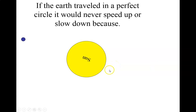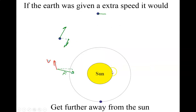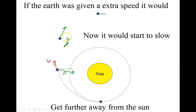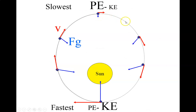If the Earth traveled in a perfect circle it would never speed up or slow down because the force and motion would be perpendicular. If the Earth were given a little extra speed, it would move further from the Sun, slow down, reach a high point, then speed up again on the other side — resulting in an elliptical orbit with the Sun at one focus. Most planets follow pretty circular orbits, but we're going to look at an object like a comet that follows a more elliptical orbit.